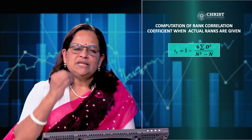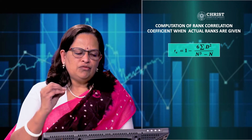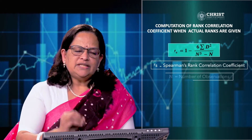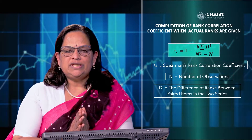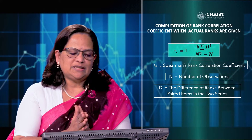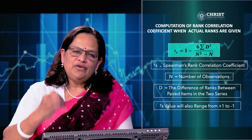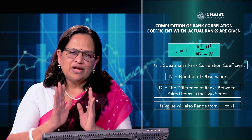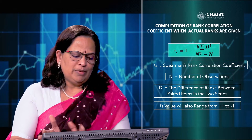The equation is very simple: rs = 1 − (6 × Σd²) / (n³ − n), where n denotes the number of observations, rs is the Spearman's rank correlation coefficient, and d is the difference between paired items in the two series — that is, the difference between the two sets of ranks. The rs value will also range from +1 to −1. If you get a value more than 1, you have to recalculate, because your answer is wrong.